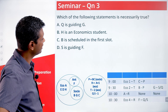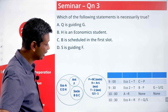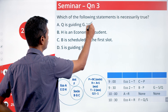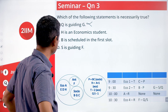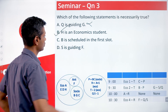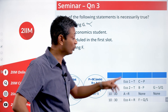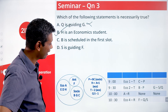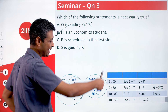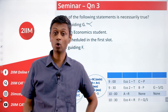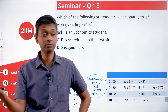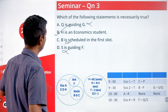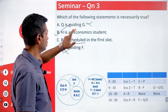Which of the following statements is necessarily true? Q is guiding G — not necessarily, it could be S. Q is guiding F — not true. H is an economics student — yes, A, D, E, H are all economics students, so this is true. B is scheduled in the first slot — no, B is in the second slot. S is guiding F — we don't know; F and G are guided by S and Q but we don't know which is which.